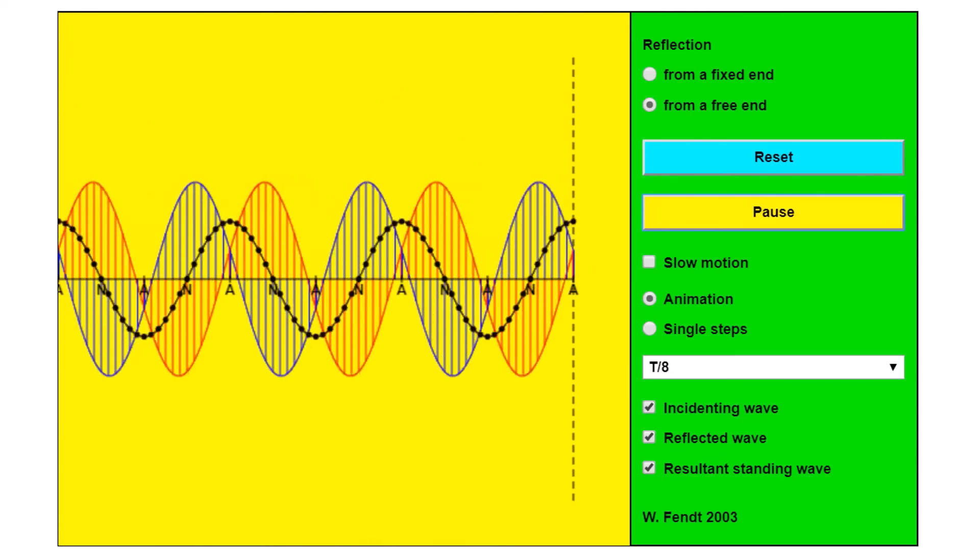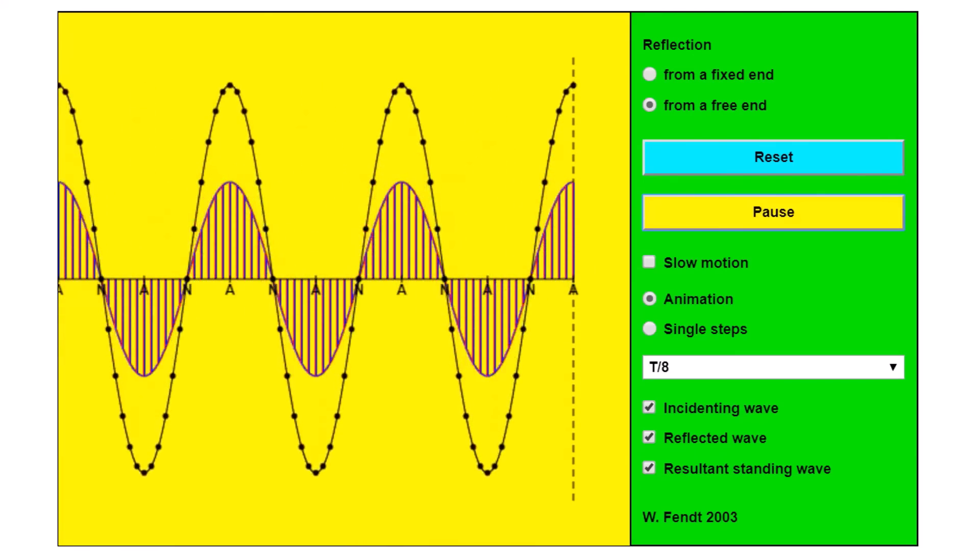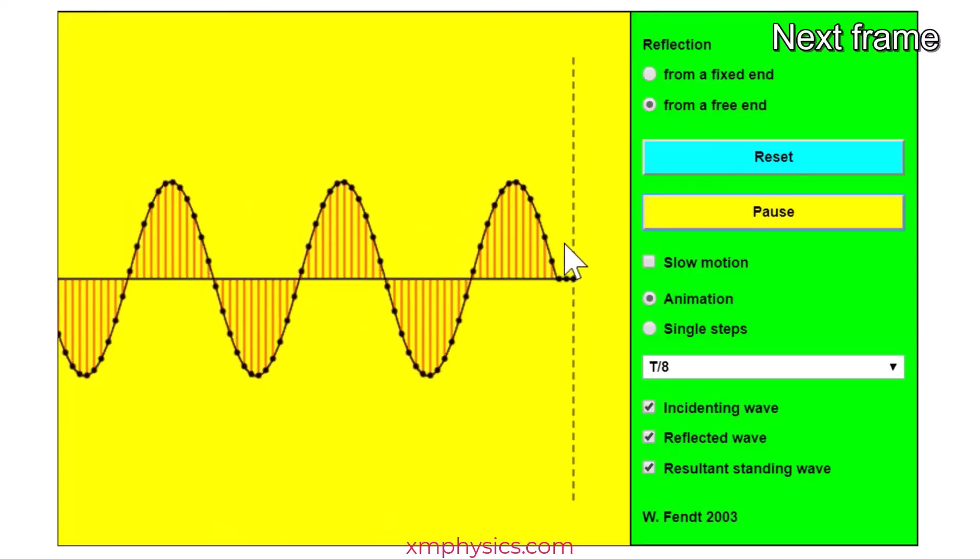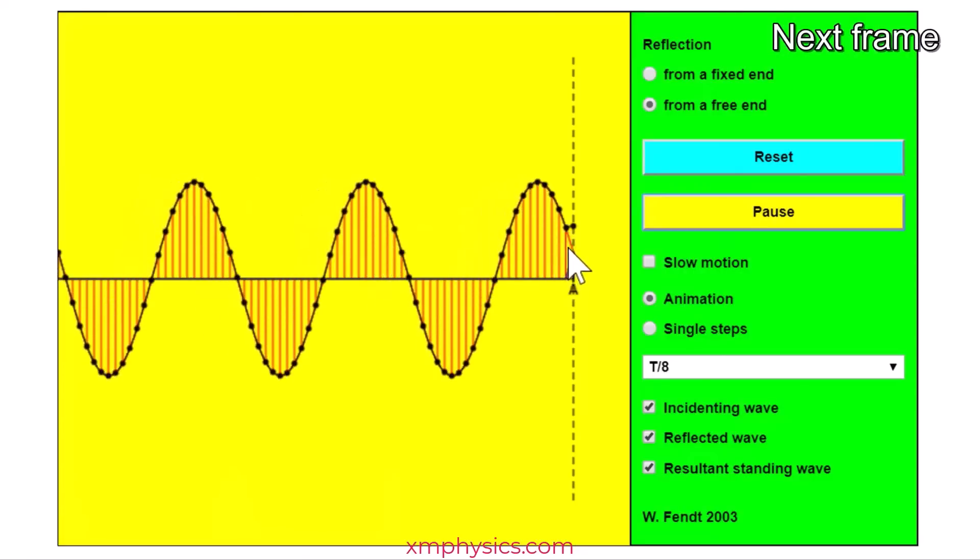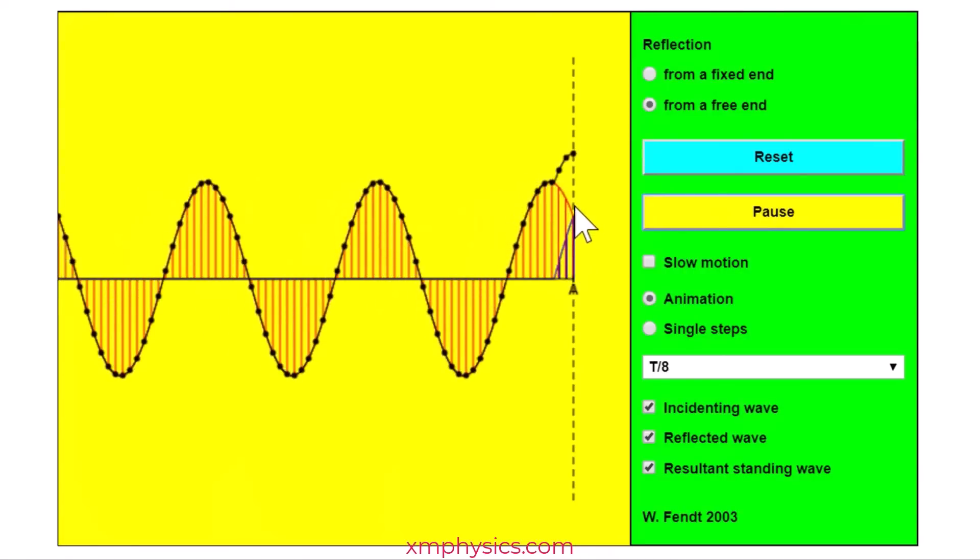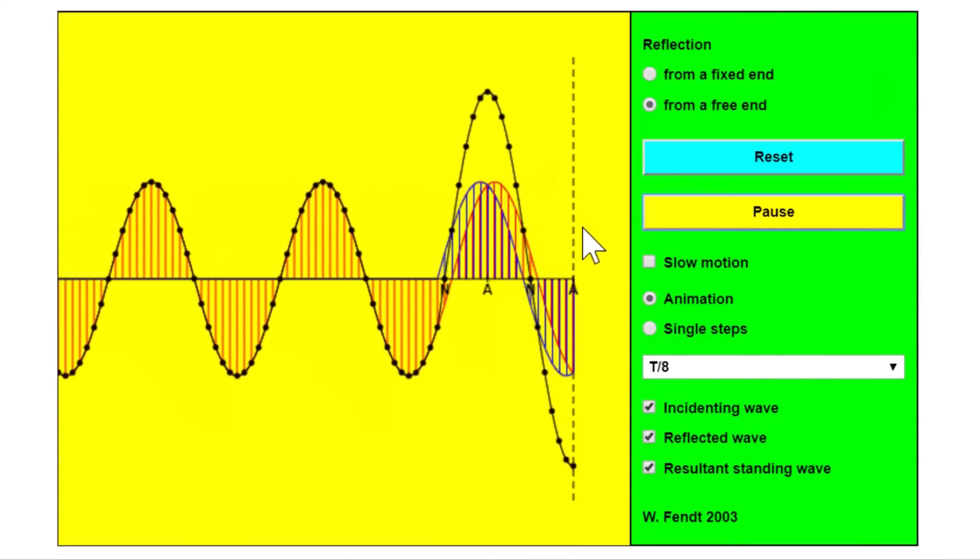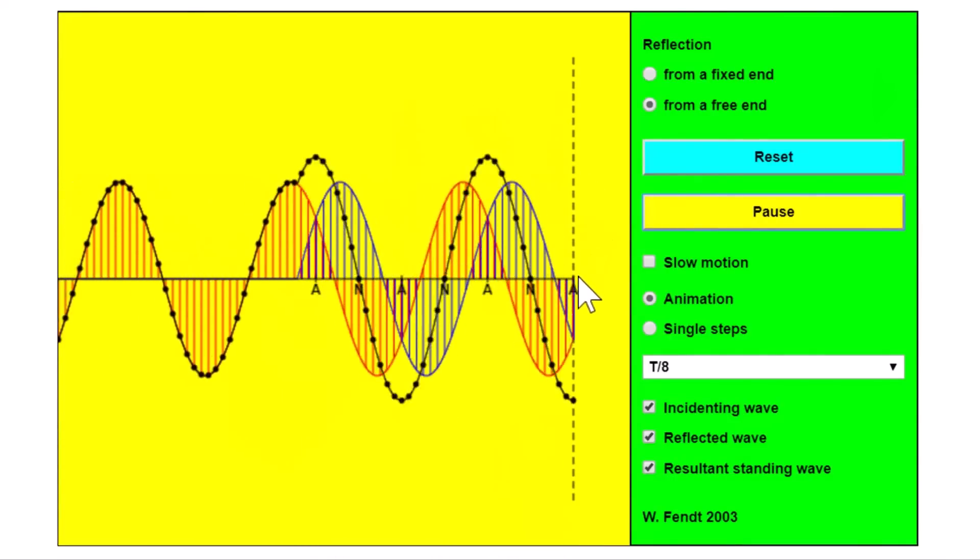but we can also think in terms of the incident and reflected waves. You see, because it's a loose end, when a wave reflects, it reflects without any phase change. So the incident and reflected wave always have the same displacement in the same direction. When they superpose, you always get double the displacement. And that's why at the loose end, it's always an anti-node that's formed.